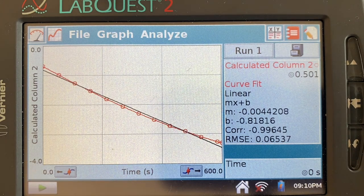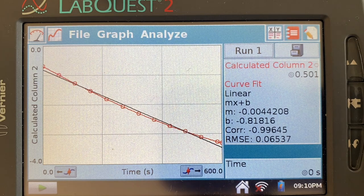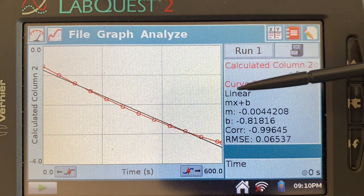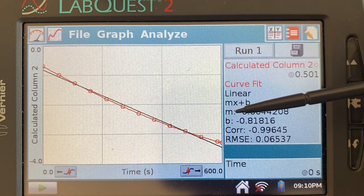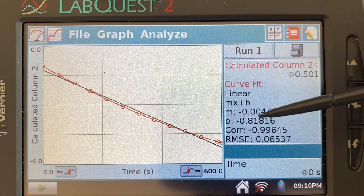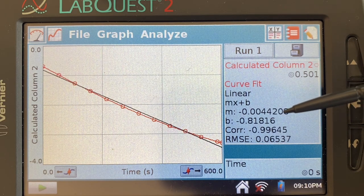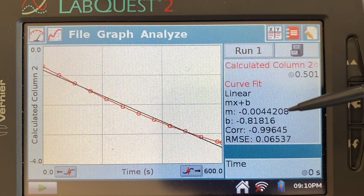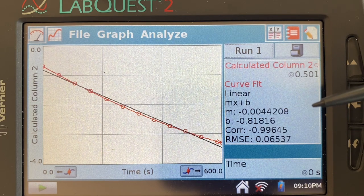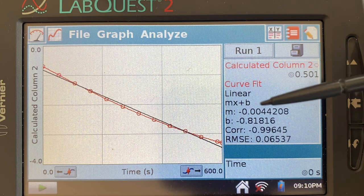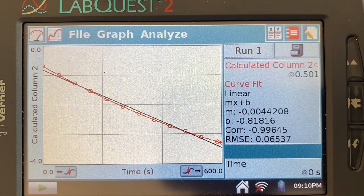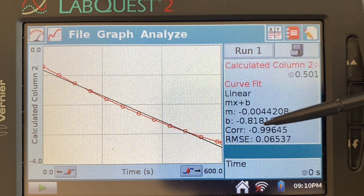But what I do have here is the equation for the line over here. And it shows here that my slope of that line, of my best-fit line, is negative 0.0044208. And that slope is negative, and it's also equal to the negative rate constant. So by doing this, I now have found out that it is first order, and I now have my rate constant.